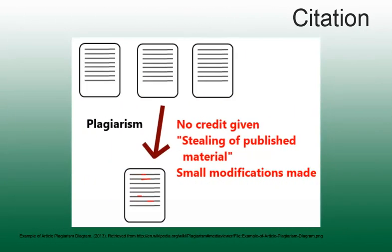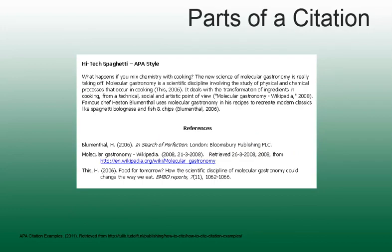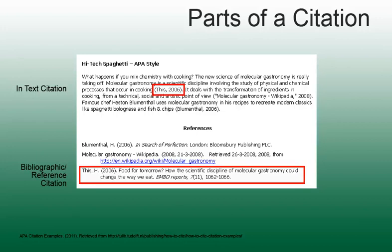In order to avoid plagiarism, a citation is needed. A citation contains two parts: the in-text citation, which identifies what information in your paper or project is from another source, and the bibliographic or reference citation, which identifies where you found the information.